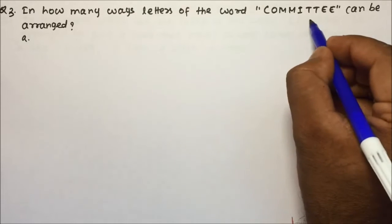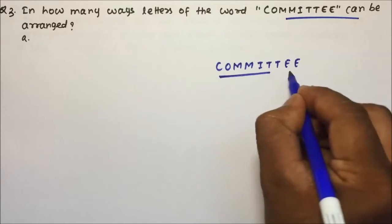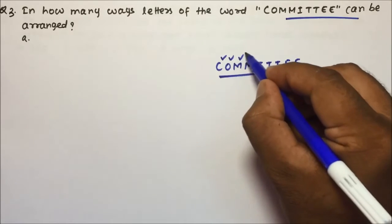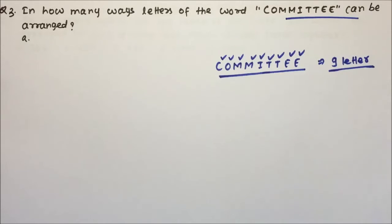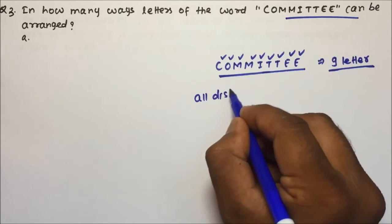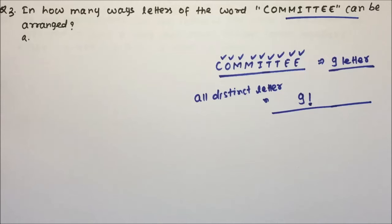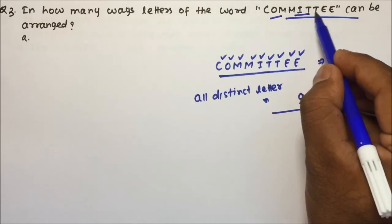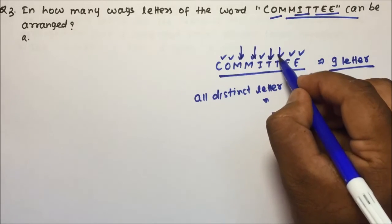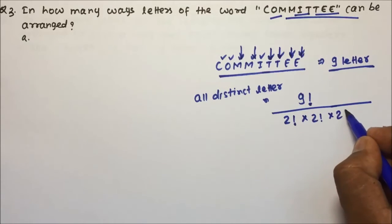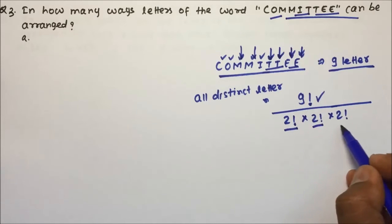Question number 3: in how many ways can the letters of the word COMMITTEE be arranged? The word COMMITTEE has 9 letters total. If all letters were distinct, it would be 9 factorial ways. But M is repeated 2 times, T is repeated 2 times, and E is repeated 2 times. So the answer is 9 factorial divided by (2 factorial × 2 factorial × 2 factorial).